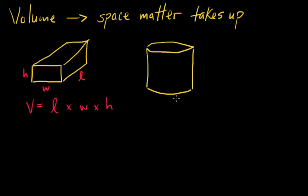What's the formula for volume for the cylinder? It's going to be pi r squared times h. Remember, r is the distance from the center of the cylinder to the edge. That's r. And remember that pi equals 3.14.